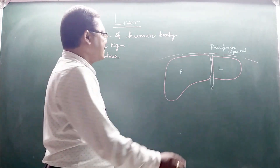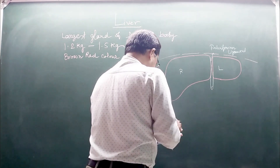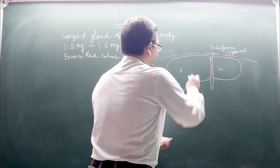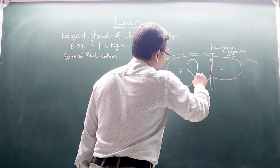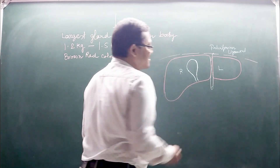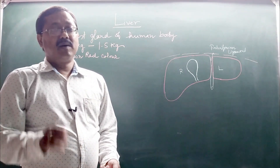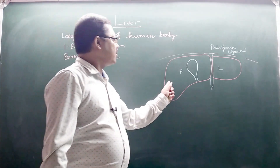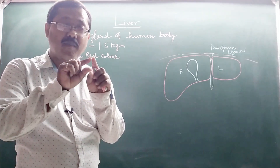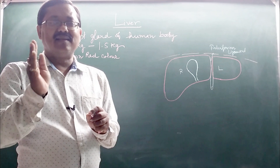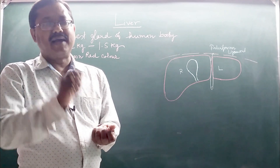The gallbladder is present on the dorsal side of the liver and is the storehouse of bile. The liver is composed of several groups of cells arranged in the form of cords, and these cells generally secrete an extracellular product called bile.